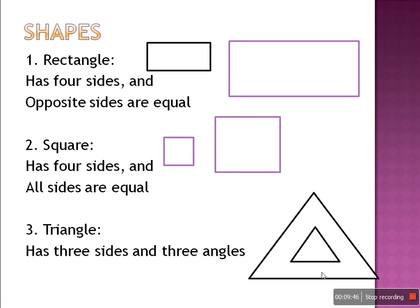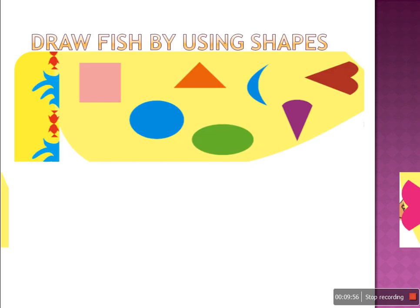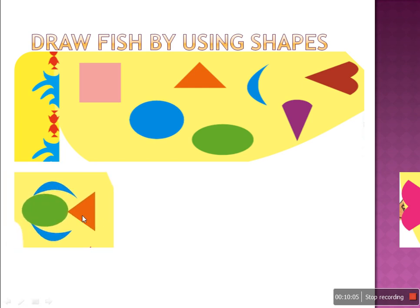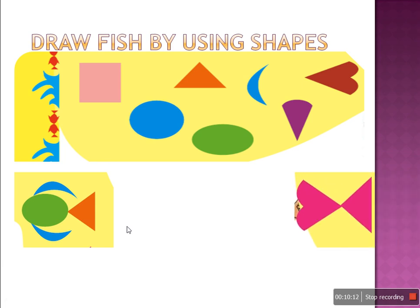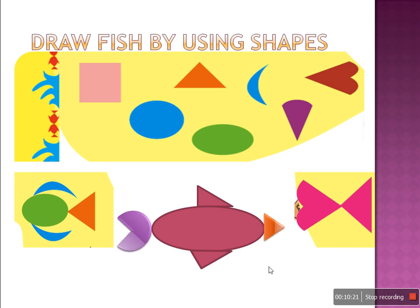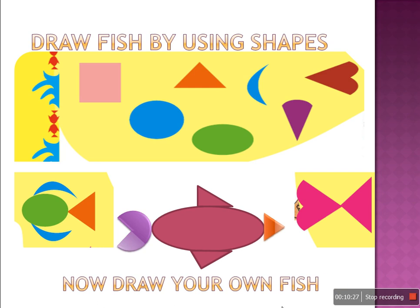This small triangle comes inside the big triangle. Other shapes are also there, which we will learn later. So now draw a fish using shapes. We can draw like this — using triangle and some circle shapes. We can make another fish again using triangles. You can make another fish using all these shapes. So now you have to draw your own fish by using these many shapes.